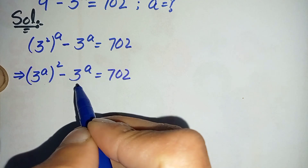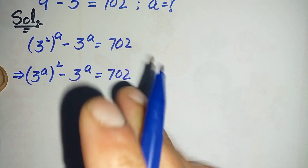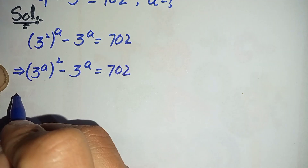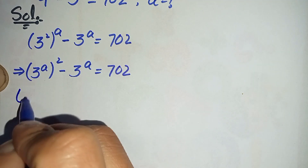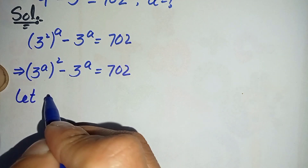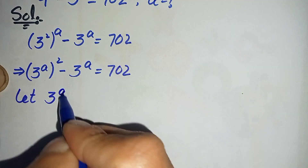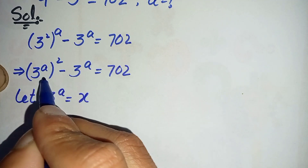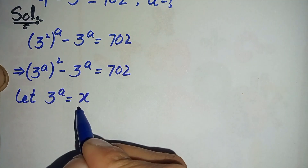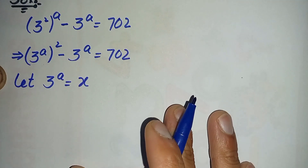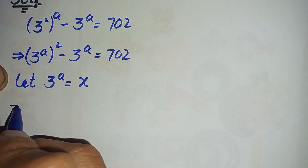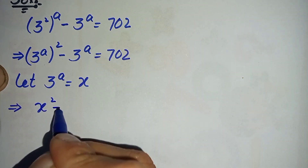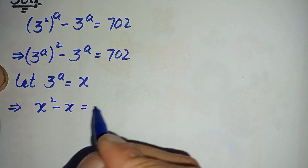Now look at the left-hand side — there is 3 raised to power a in both terms. So here we will make a substitution. Let us suppose 3 raised to power a is equal to x. In the next step, we will replace 3 raised to power a with x in this equation.